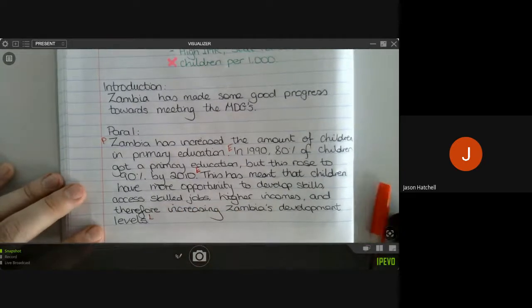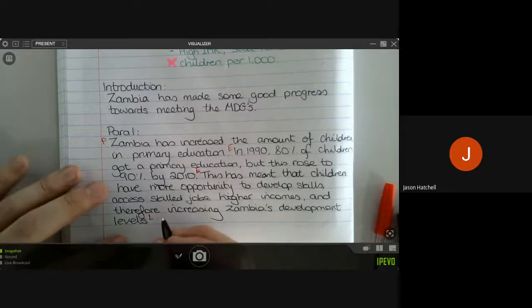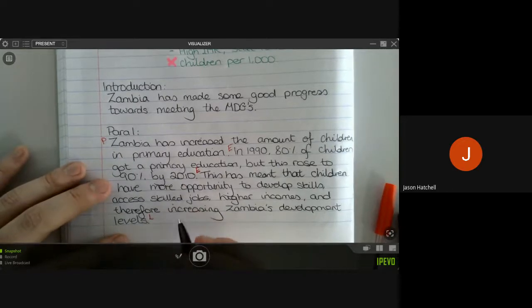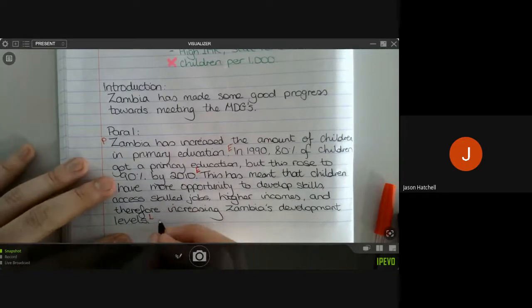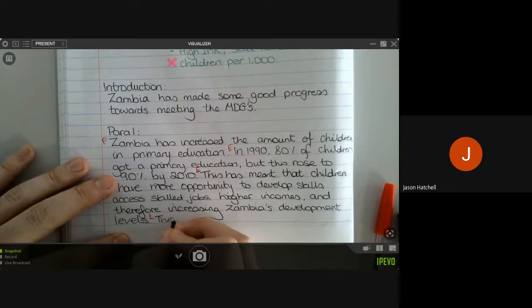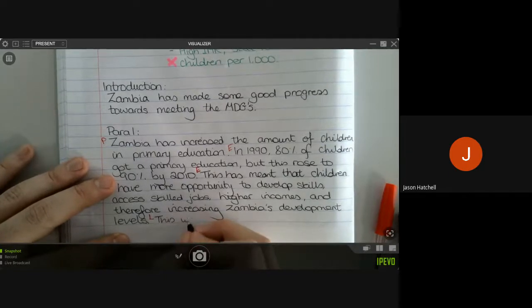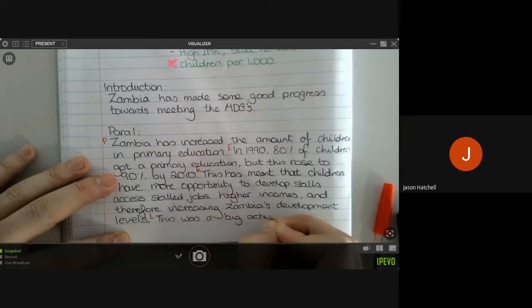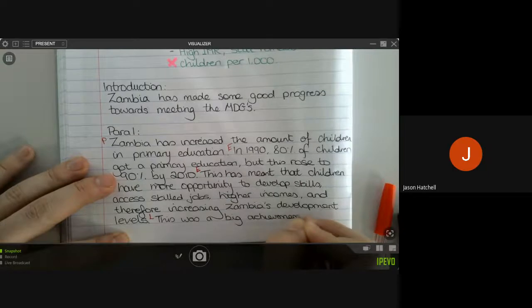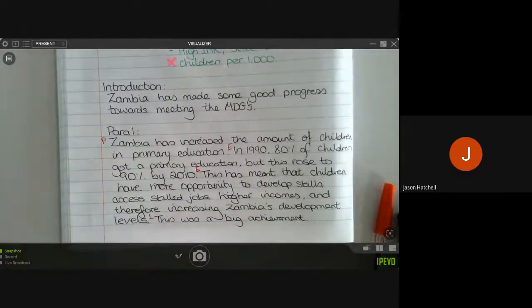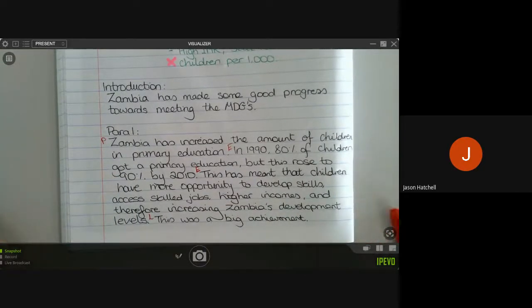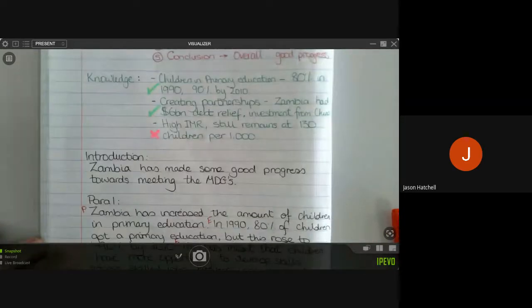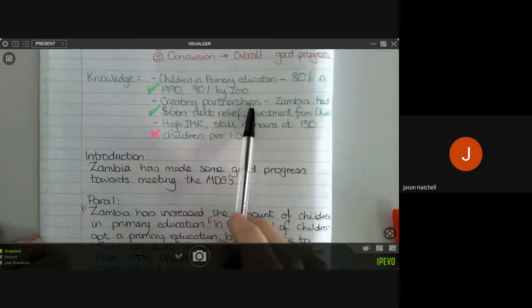Okay. You can also add a final sentence here to make that link really explicit, which would be: this was a big achievement. And you are done that paragraph. So we're going to move on to our second paragraph now. And that is going to argue that Zambia has created global partnerships. It's had debt relief from nations as a result of its good cooperation with them and friendliness with them, and it's also had investment from China.